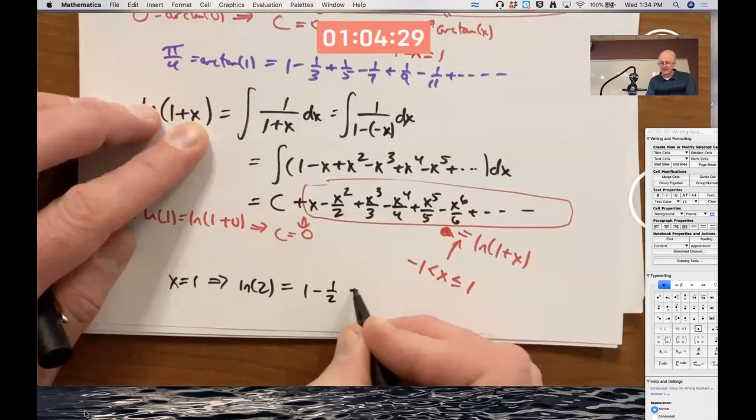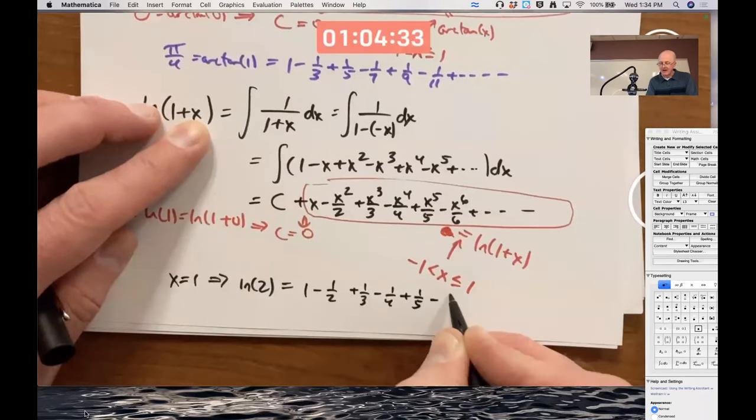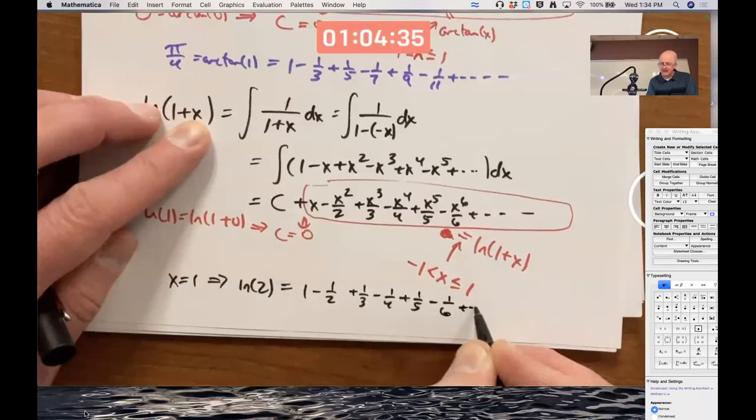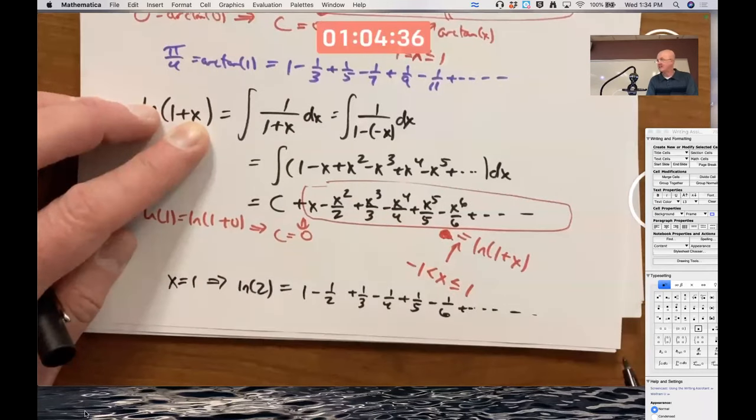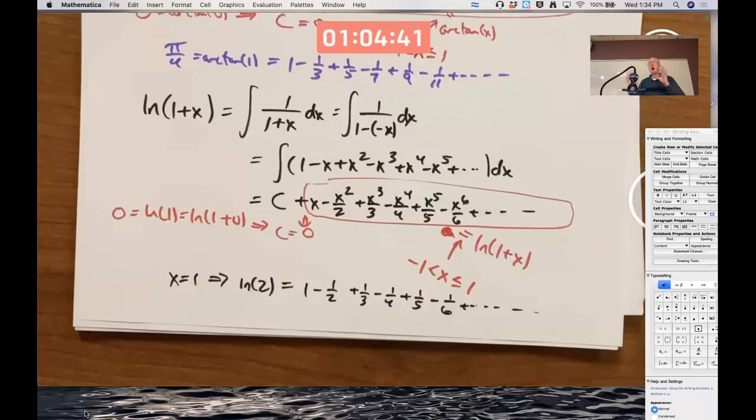We already saw that was natural log of 2. Is this a proof? No. It's a derivation or maybe a plausibility argument. It's not a rigorous proof, but we're happy with it. You could still say it's fun.